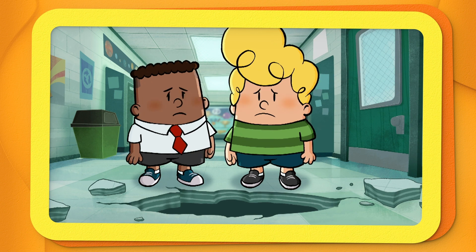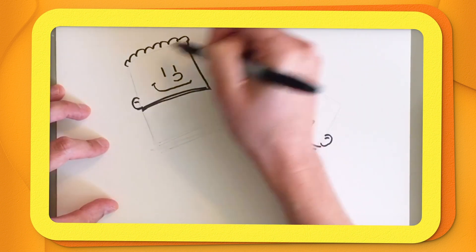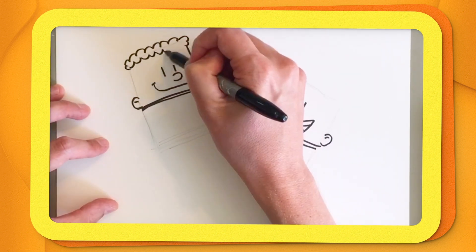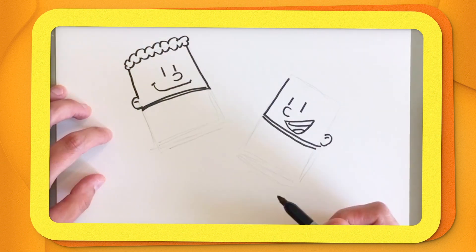For George, we're going to give him his signature flat top, which is kind of like a bumpy cloud shape.